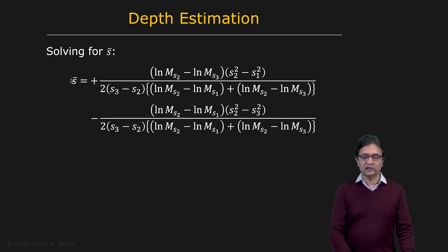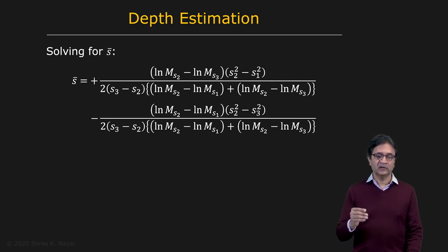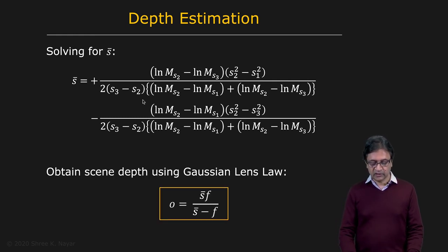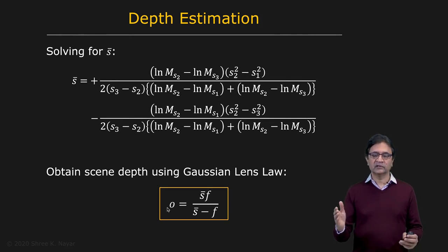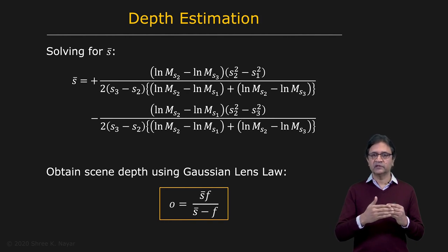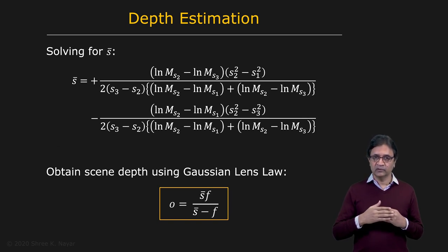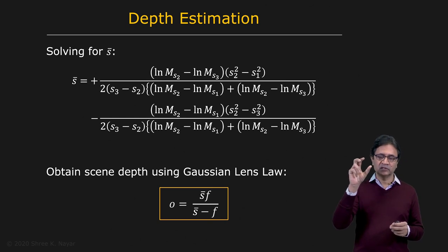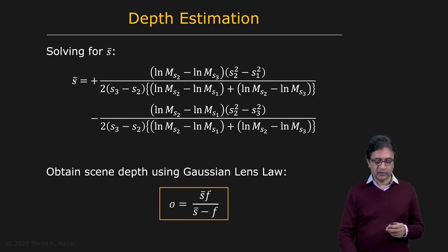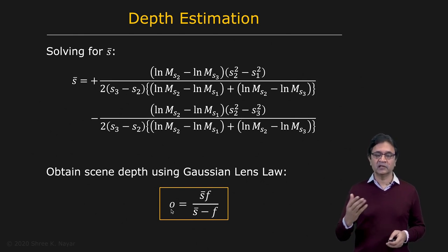Once we have S̄, that tells us where that patch would have been perfectly focused had we taken an infinite number of images. We plug S̄ into the Gaussian lens law to get the depth of the point. The full algorithm: take a focal stack, apply the focus measure to get discrete values for discrete sensor locations, pick the largest three values for each point, use Gaussian interpolation to find S̄, and compute depth.